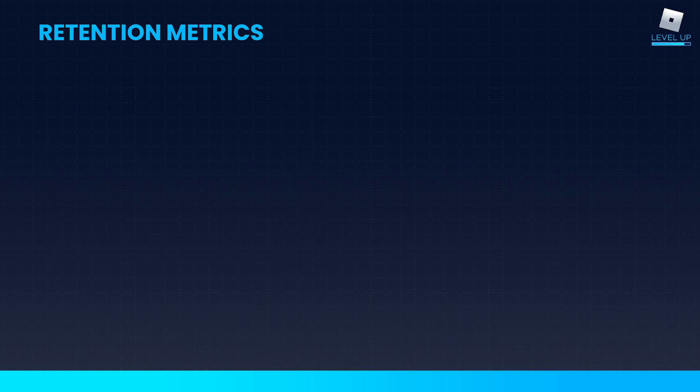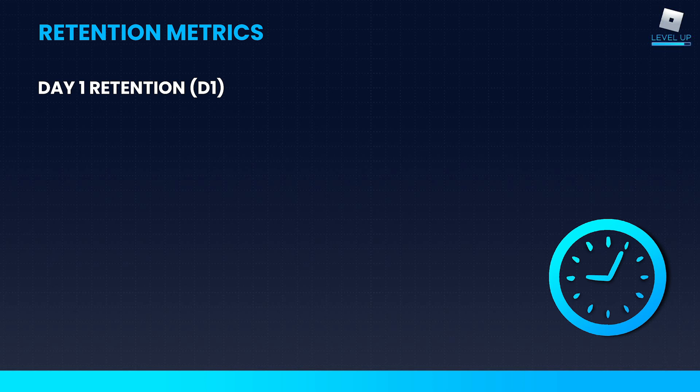These three sets of metrics tell me different things as a designer. For day one retention, if I see that these numbers are low, that indicates players are joining my game on the first day and something there is not motivating them to come back the next day. Most commonly, the player is getting confused or frustrated with the experience, or you're spending too much time telling them how to play and they're not getting to the moment where they find fun. So if I see a low D1 retention, the first place I look is my onboarding and first time experience for my players.